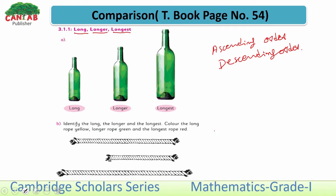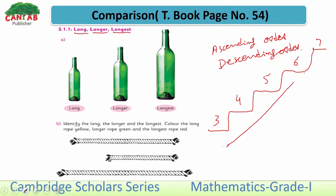When we move in ascending order, we move from lowest to highest — for example, 3, 4, 5, 6, 7. When we are in descending order, we move from highest to lowest number.